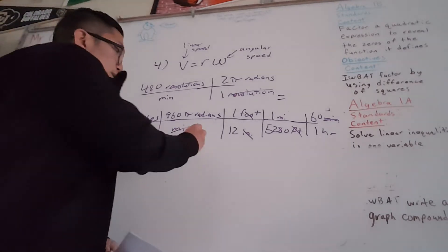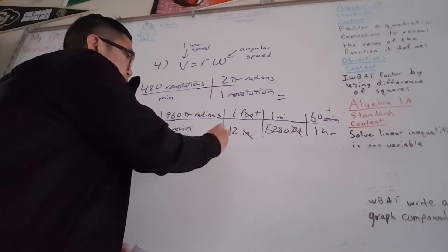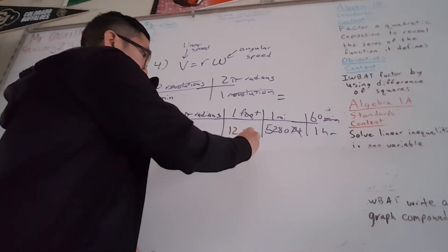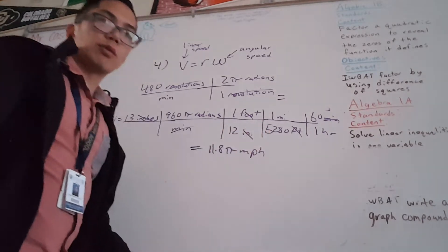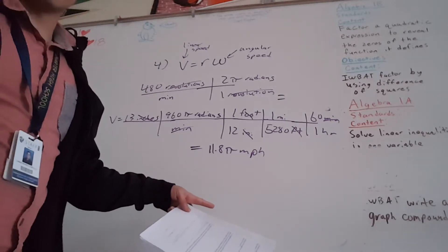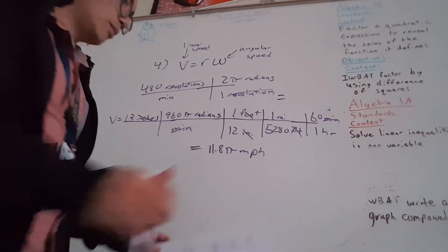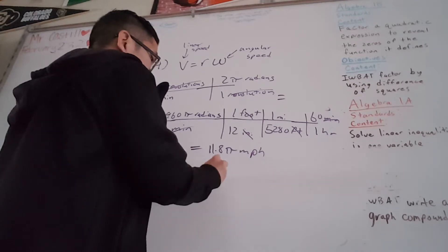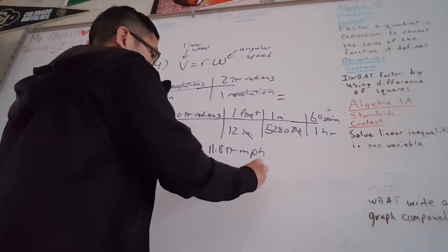So after working this out — remember I multiply by everything on the top and divide by everything on the bottom — the answer here is 11.8 pi miles per hour. However, since it's a real world scenario, we don't leave it as 11.8 pi. This is going to be about 37.1 miles per hour.